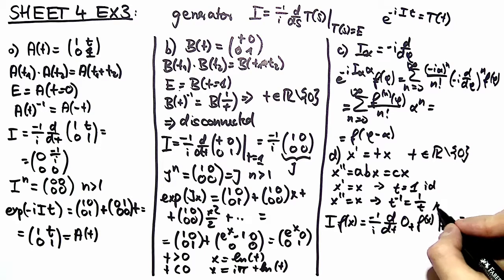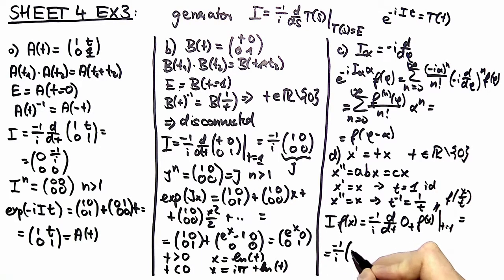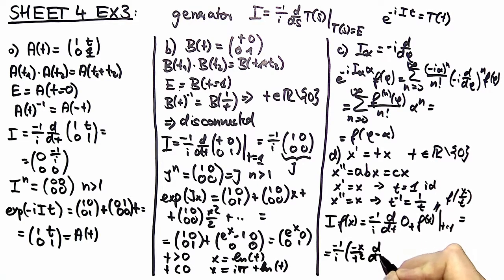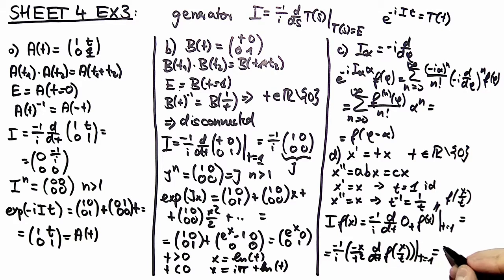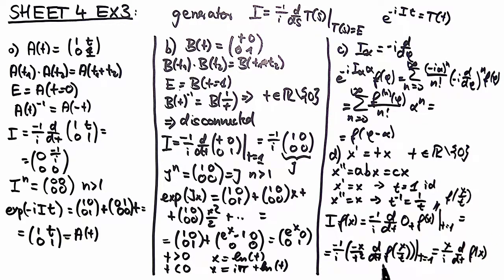We insert the representation, which is f(x/t) by definition, and apply the chain rule to get minus one over i times minus x over t squared, times d by dx of f(x/t), evaluated at t equal to one. This simplifies to x over i times d by dx of f(x). This is our generator. Again we must take two different parameter branches for the logarithm: one where y equals minus the logarithm of t, and another where y equals minus i*pi minus the logarithm of t.